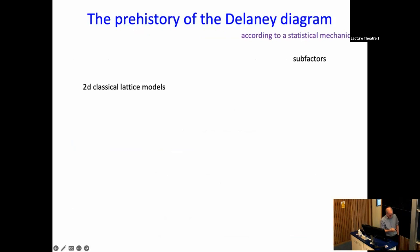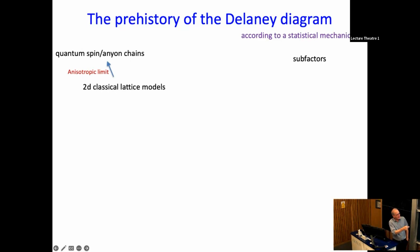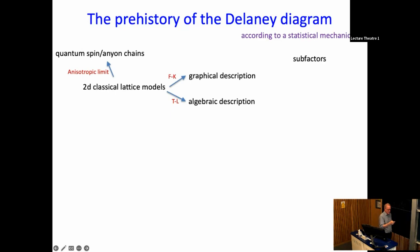For me, the core of it, and certainly the talk today, is 2D classical lattice models. On the mathematical side, there are people studying subfactors and finding nice things about that. On the other side, quantum spin chains—later renamed anyon chains—come from a limit, and so I think this is a better, more general way of thinking about it.